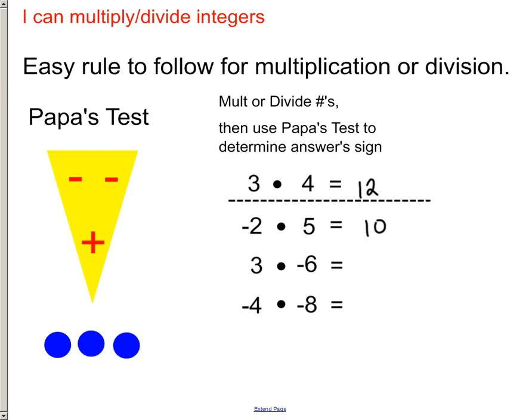And then all you do is you take a look and go, well, let's see, this is a negative number, so I'm going to cover up one of these negative signs. And remember, this triangle that you're going to draw, it's going to have two negative signs and one positive sign.